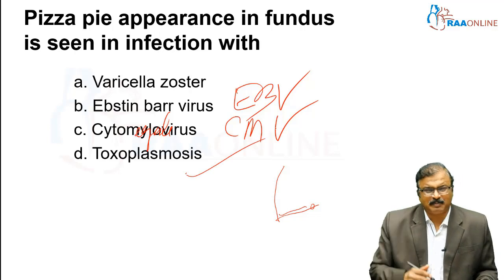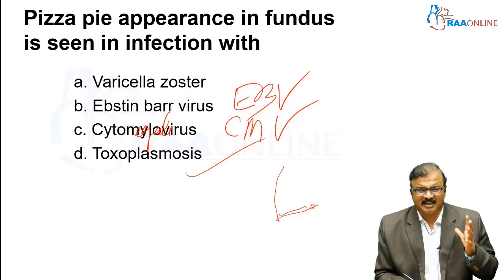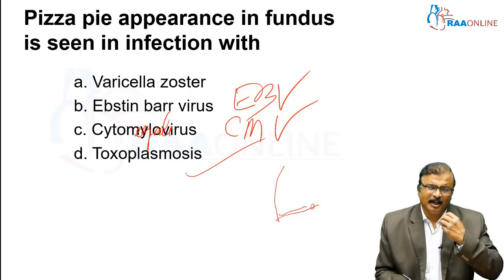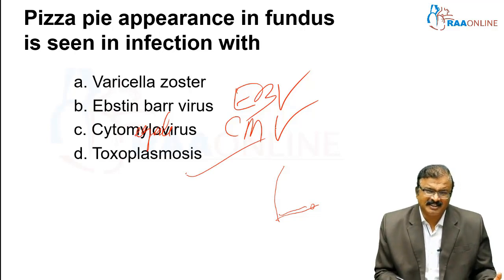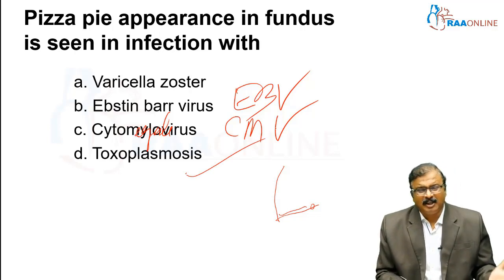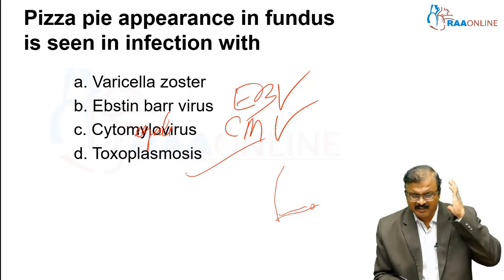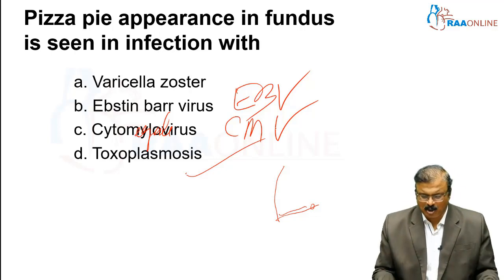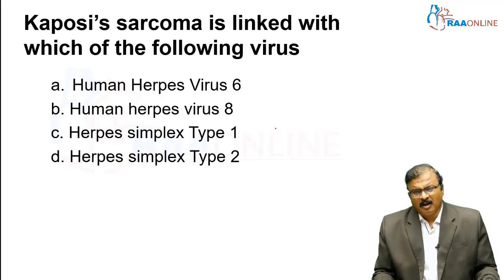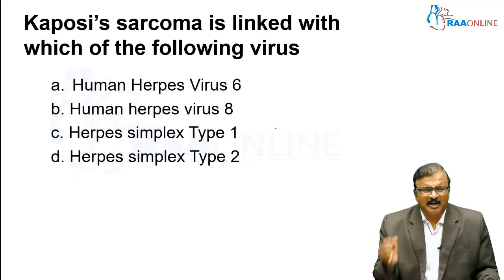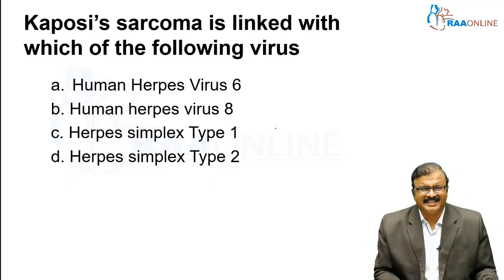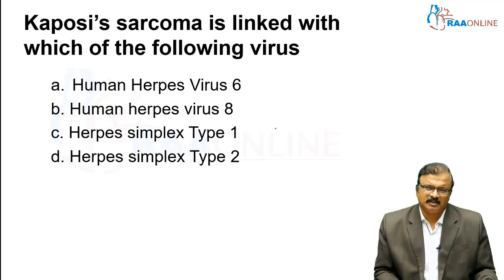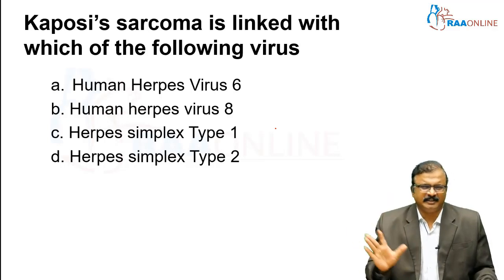Toxoplasmosis has a different presentation. When the patient is immunocompetent, it presents differently; in immunocompromised patients, it presents with cerebral lesions — multiple cerebral space-occupying lesions. Kaposi sarcoma — one important concept to know: it is caused by Human Herpes Virus 8 (HHV-8).